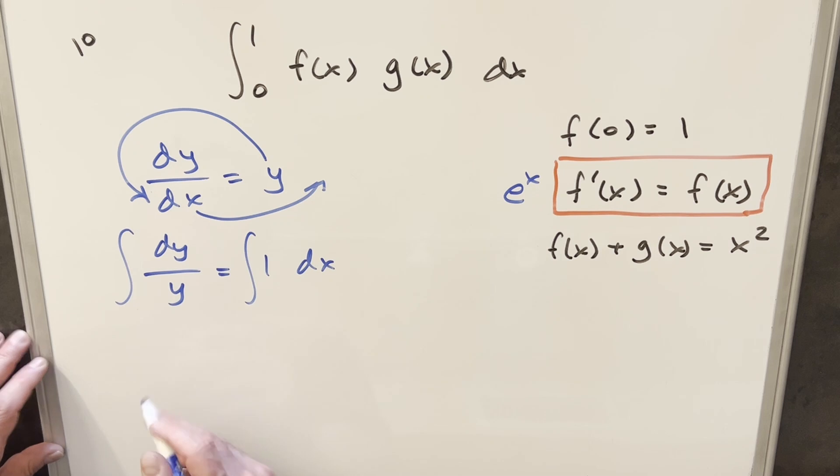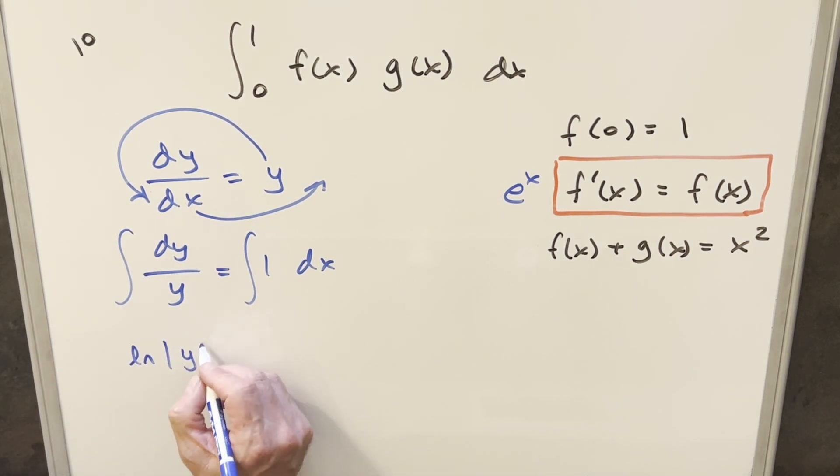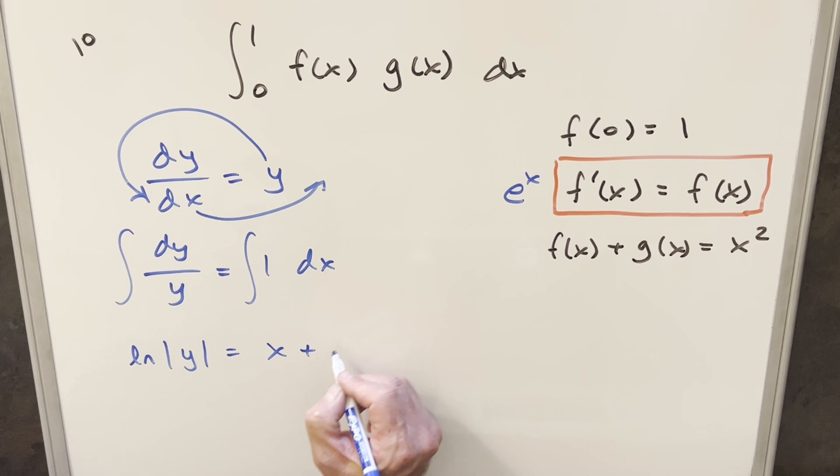Integrate it on both sides really fast. On the left side, this is going to be natural log absolute value of y. I'm going to leave off the plus c because we're going to have a plus c on this side. So what we can do is consolidate plus c. So this here is going to be x plus c over here. Use log properties on it. We have absolute value of y is going to be e to the x plus c.